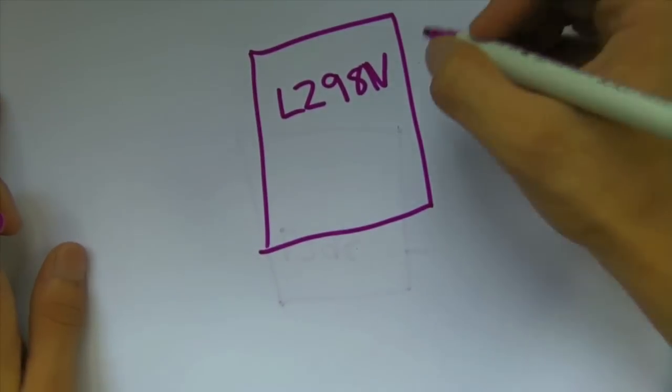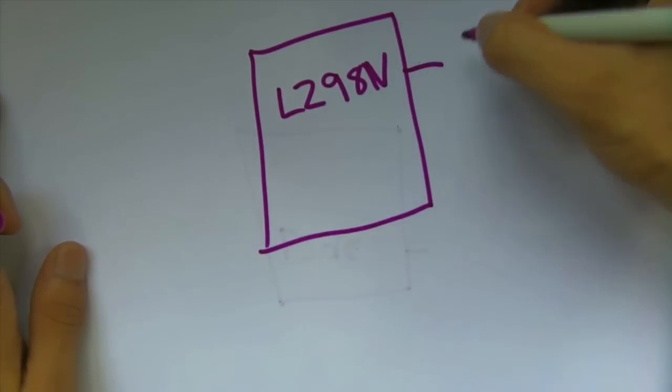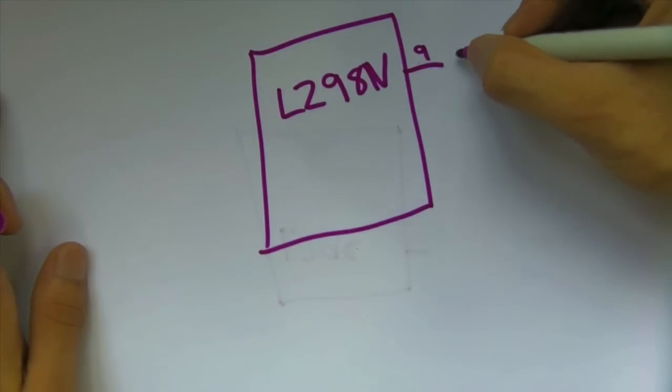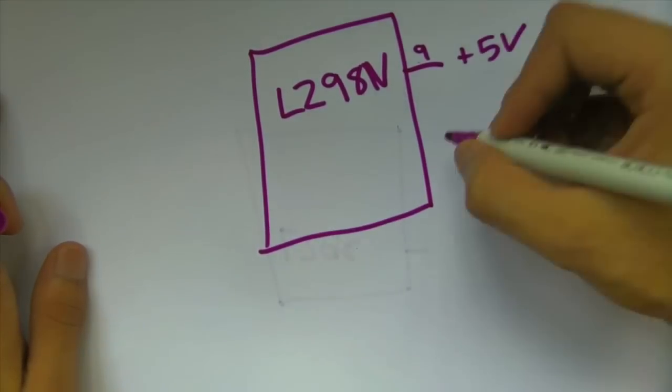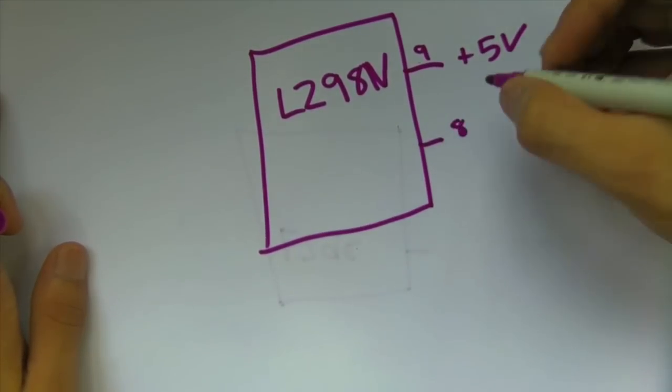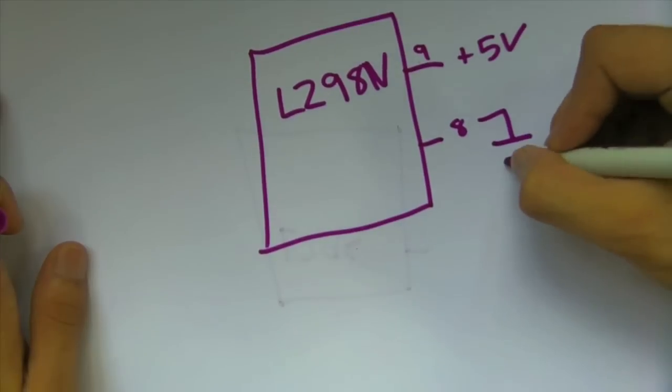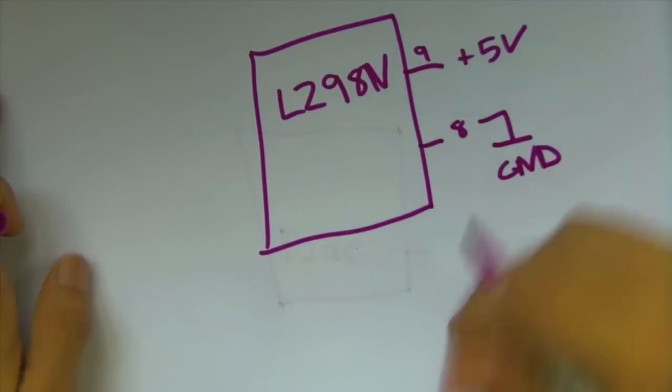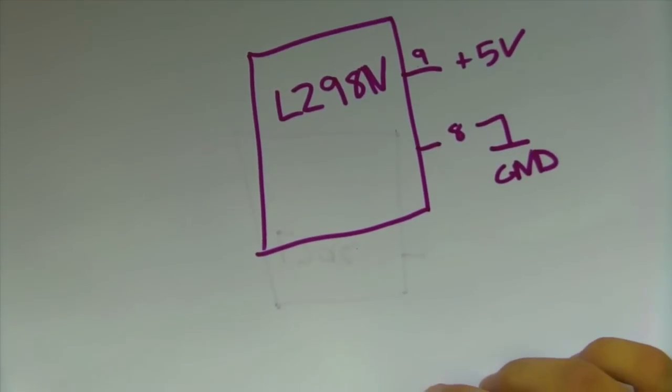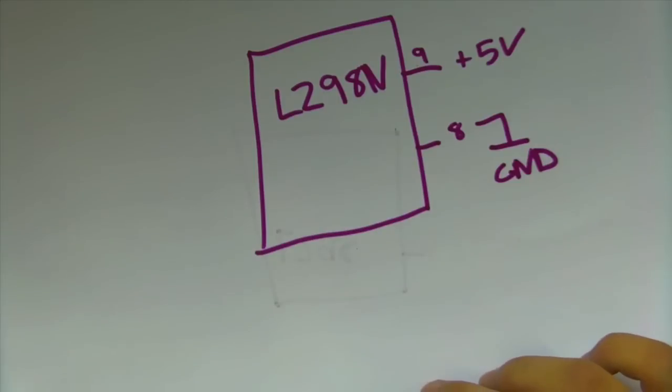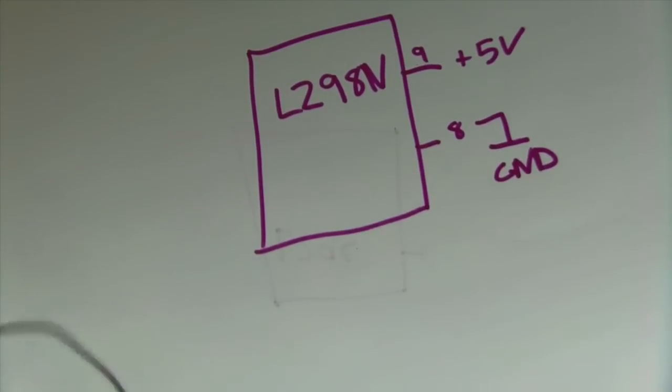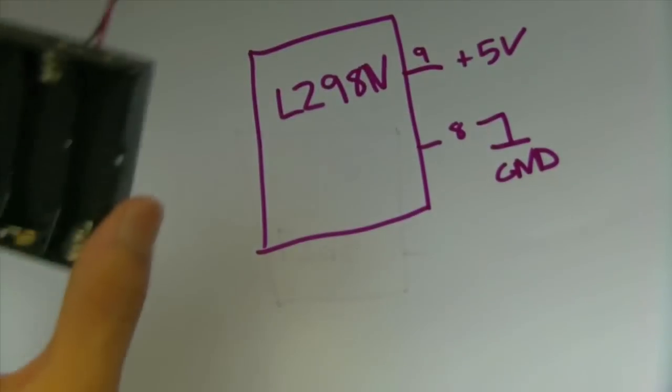You're going to have to give it power. So, pin 9 goes to 5 volts and pin 8 goes to ground. Also, you're going to have to use some sort of external power to give power to the motors because if you try powering it off your USB bus, you'll probably end up blowing something up.